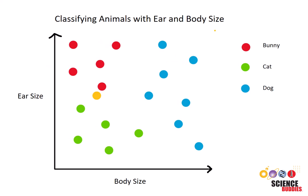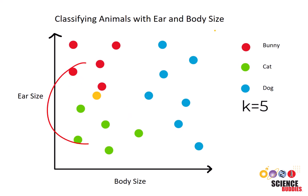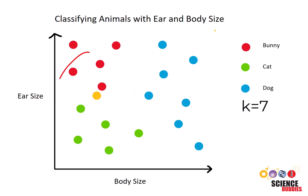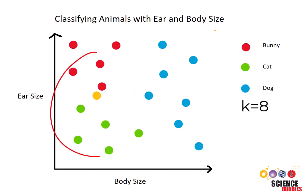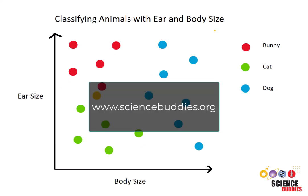Frequently, a common hurdle in K-Nearest Neighbors algorithm implementation is determining the optimal value of K that yields the highest accuracy. For a selection of KNN projects, please refer to the links in the description below. And for over a thousand other projects for all areas of science and engineering, visit our website at www.sciencebuddies.org.